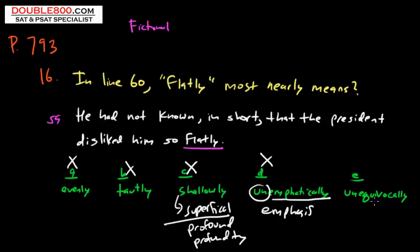And the answer here is E, unequivocally. To equivocate, this is a very common SAT word. To equivocate has nothing to do with the word equal. I know students see that root there, they think maybe it's equality. Nothing to do with that.